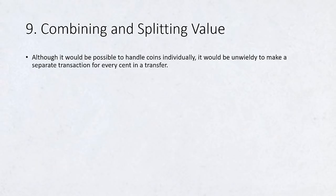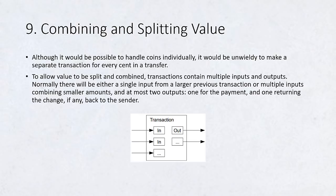Combining and Splitting Value. Although it would be possible to handle coins individually, it would be unwieldy to make a separate transaction for every cent in a transfer. To allow value to be split and combined, transactions contain multiple inputs and outputs. Normally there will be either a single input from a larger previous transaction or multiple inputs combining smaller amounts, and at most two outputs: one for the payment and one returning the change, if any, back to the sender.